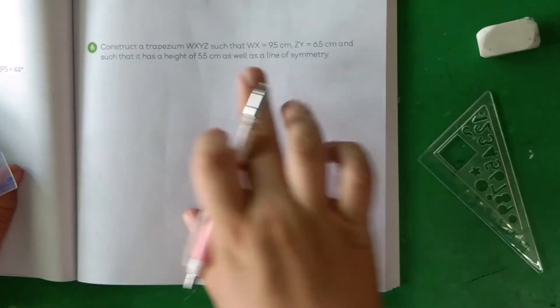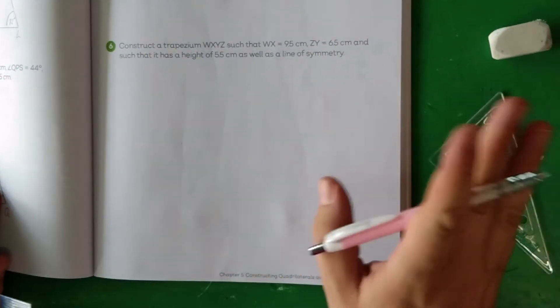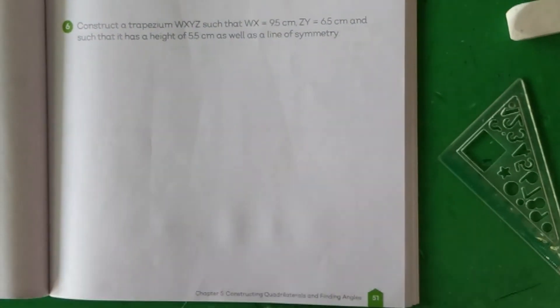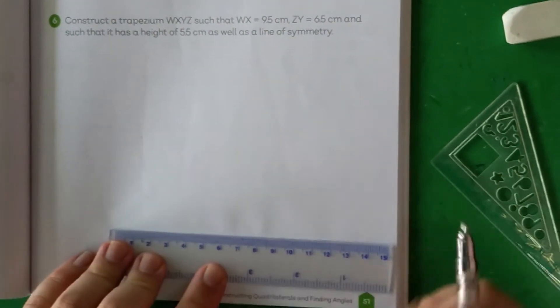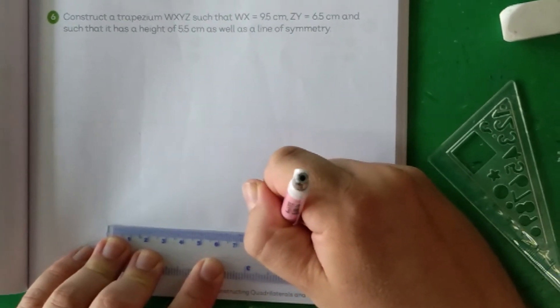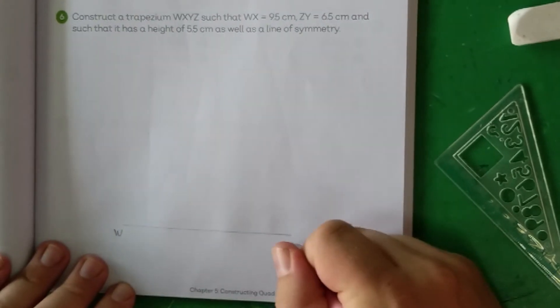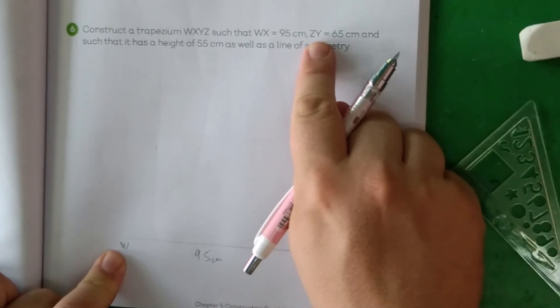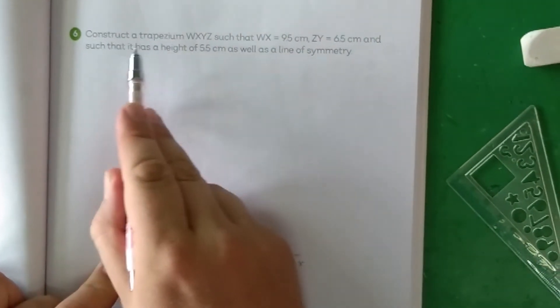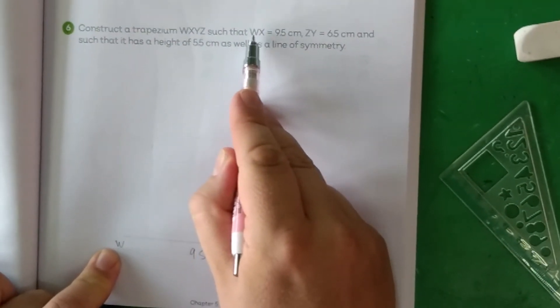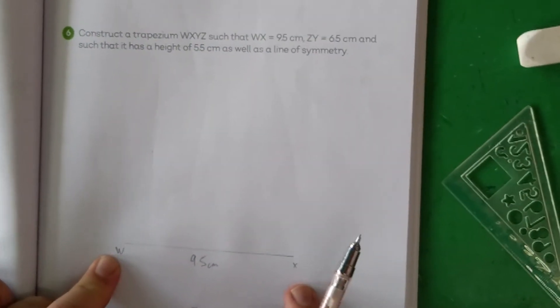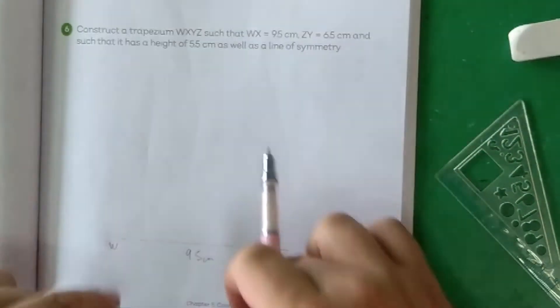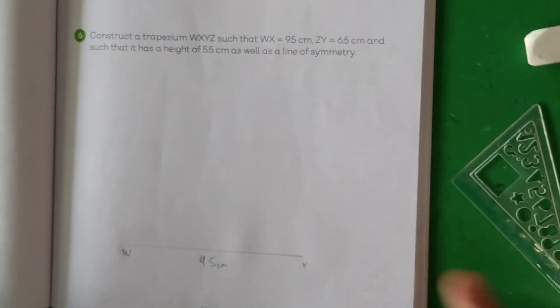Last one. This trapezium is a bit different to this one in that we only have length and height values. Let's draw in our WX just for our starting block and then we can have a think about how we can go about drawing our trapezium. Let's put WX 9.5 centimeters. We've got our W and X points. We know that Z and Y...